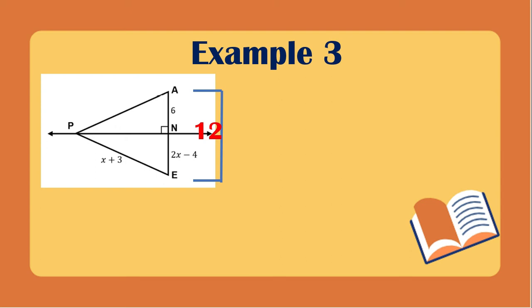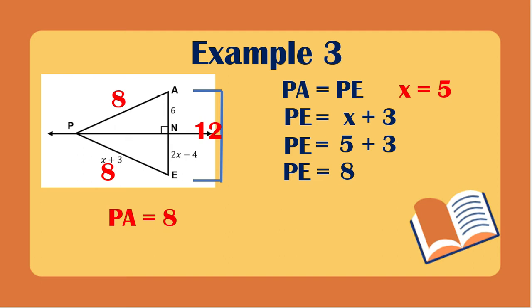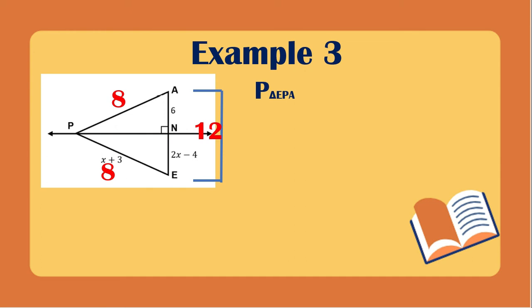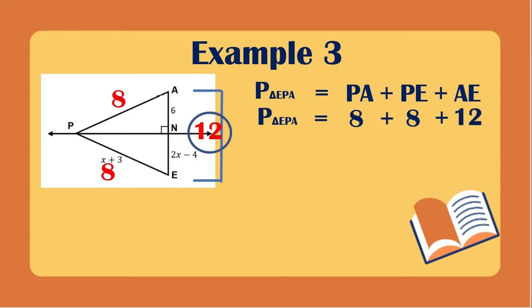We also need the other sides. PA equals PE, and PE equals X plus 3. Since X equals 5, PE equals 5 plus 3, so PE equals 8. If PE is 8, then PA is also 8. To find the perimeter of triangle EPA, we add all the sides: PA plus PE plus AE equals 8 plus 8 plus 12, so the perimeter of triangle EPA equals 28.